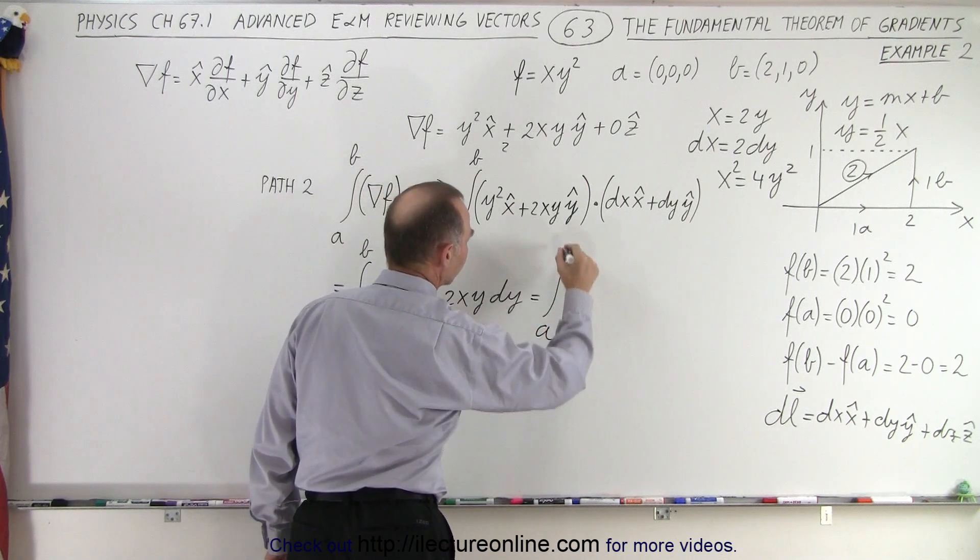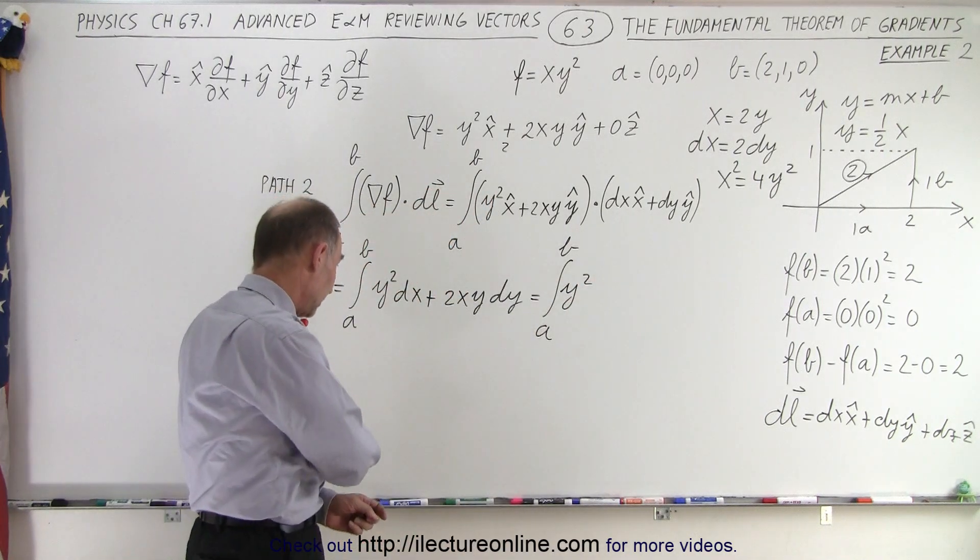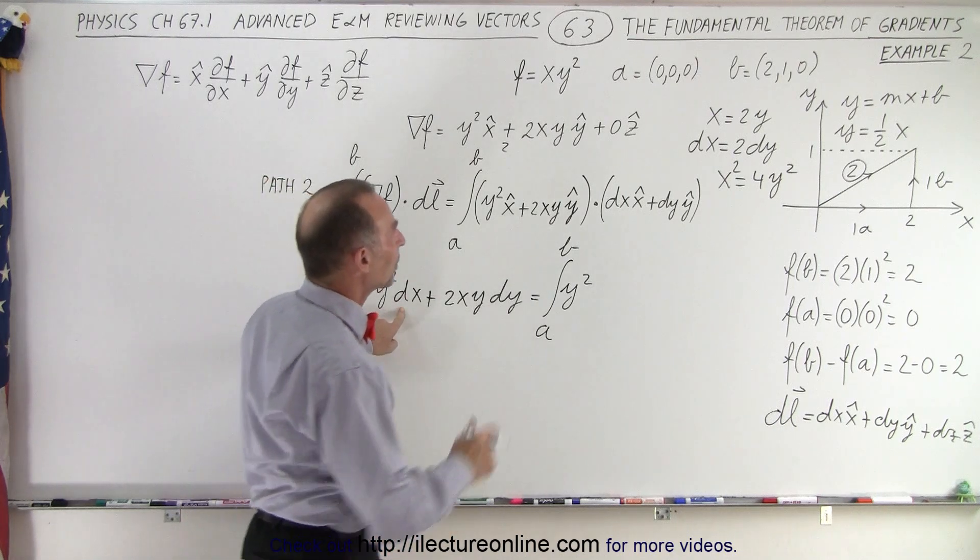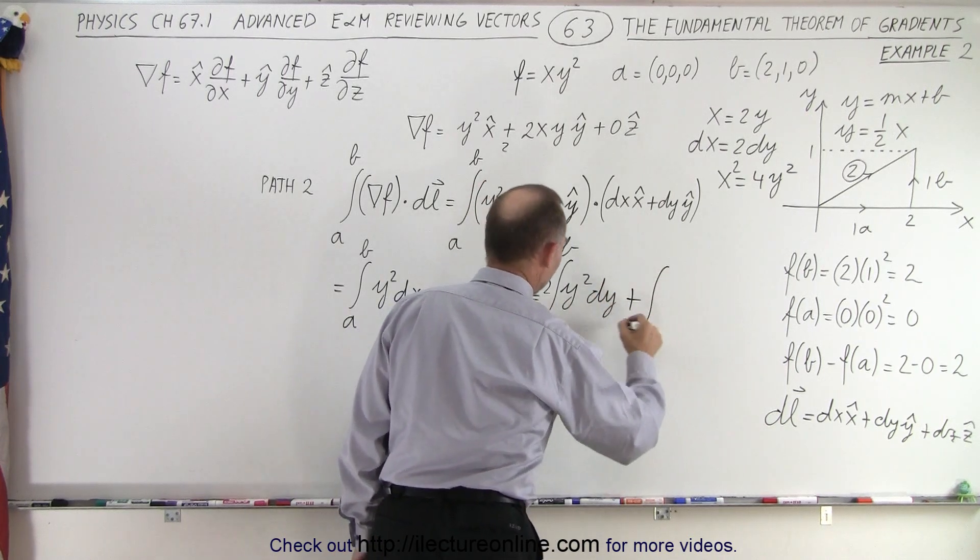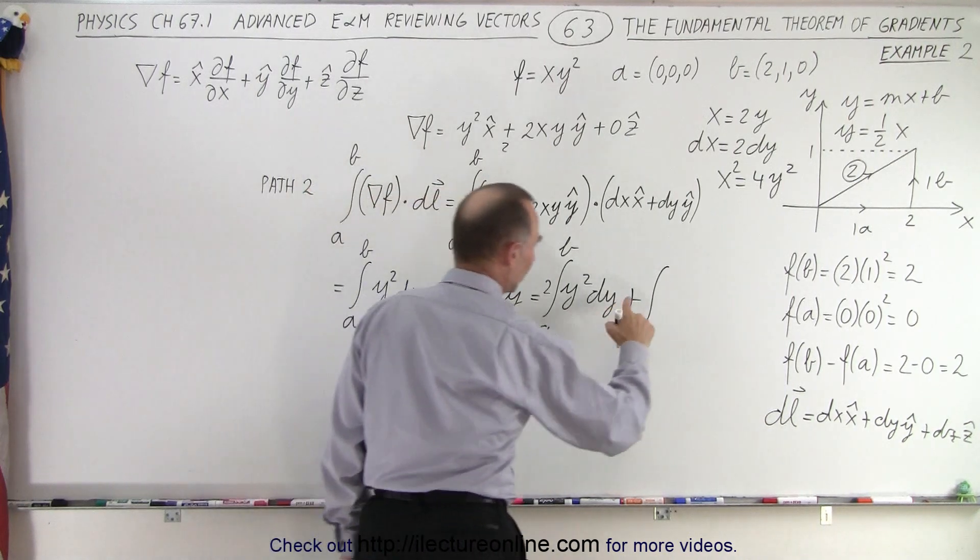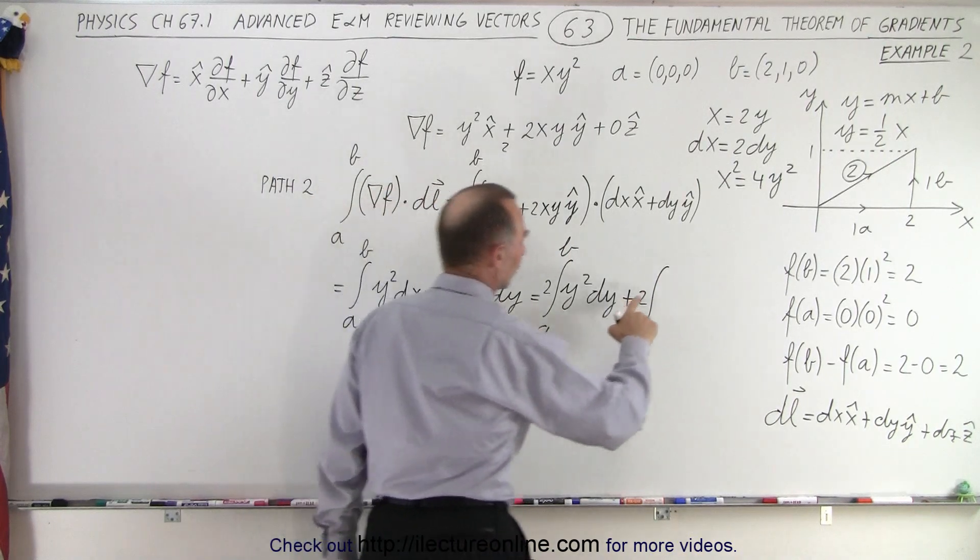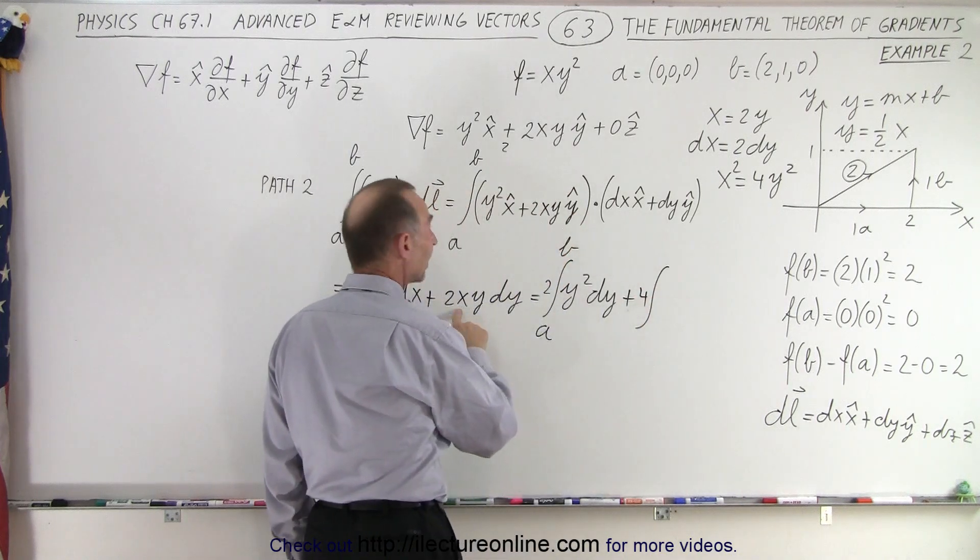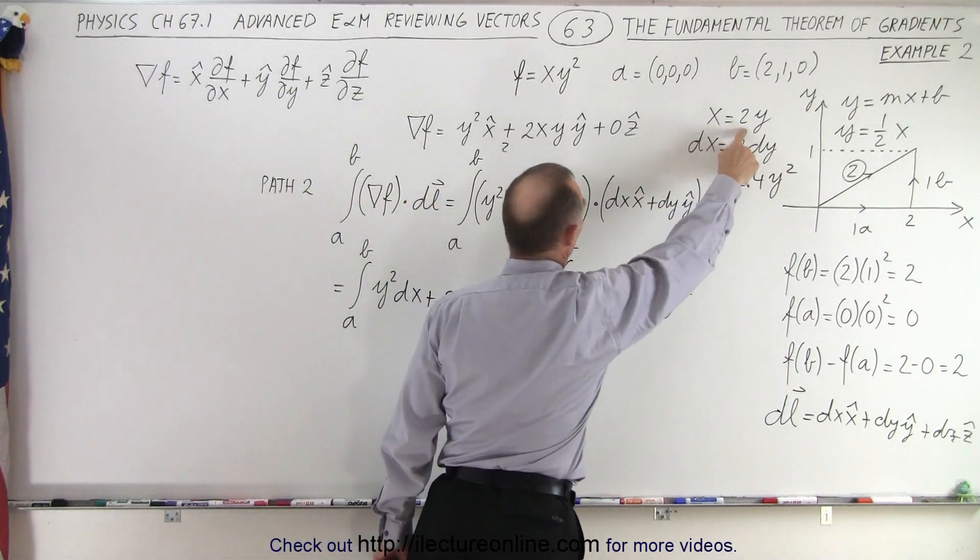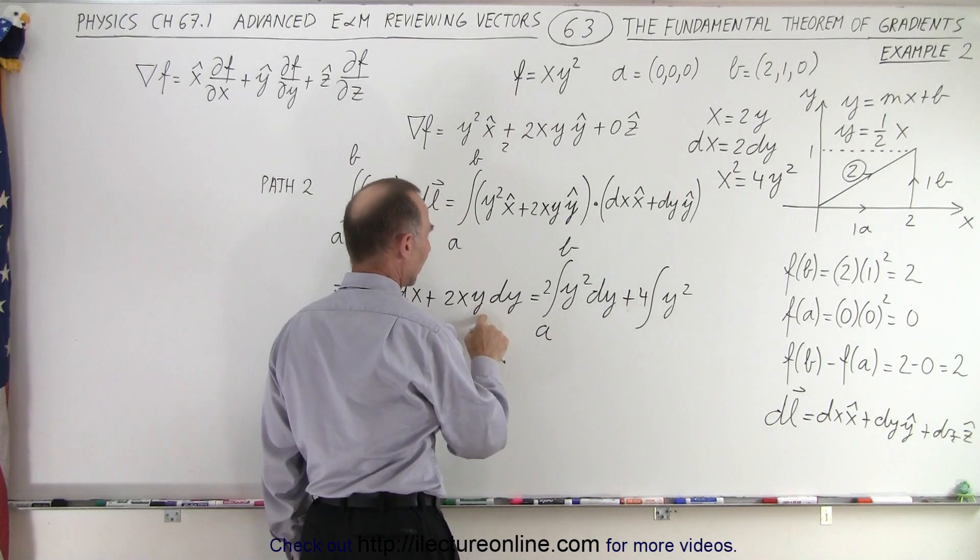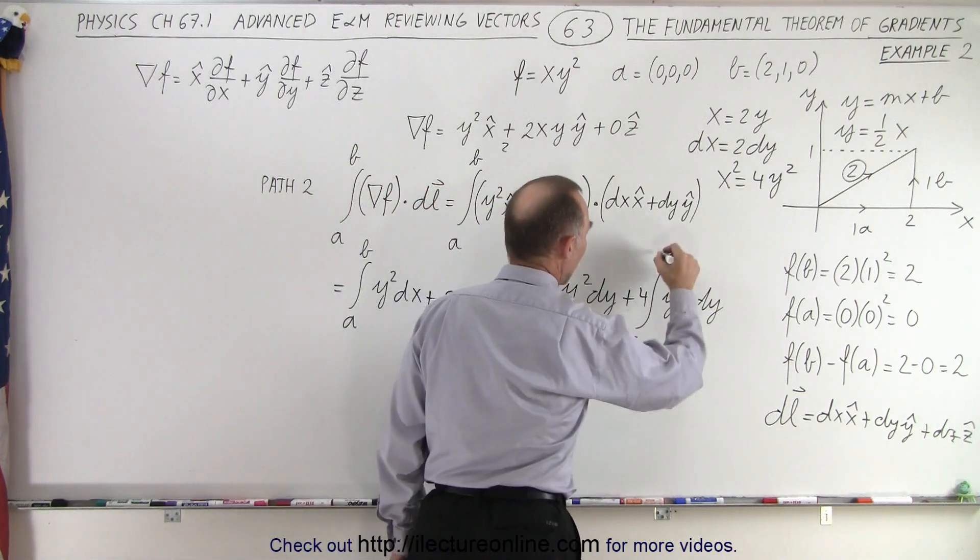So this can be written as the integral from a to b where y squared remains, and dx becomes times 2dy, so I'll put the 2 in front and write this as a dy. Then plus a second integral, I have a 2 in front, plus 2 times an x. x can be turned into 2y so that gives me a 4, 4y times y which would be y squared. So the x here is 2y, 2 times 2 is 4, and the y times the y becomes y squared and I have a dy.